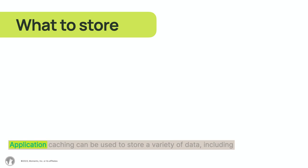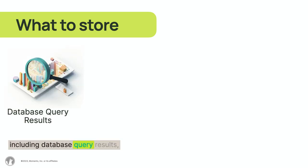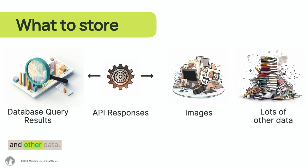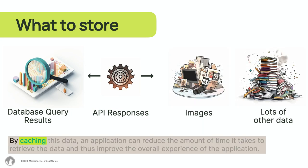Application caching can be used to store a variety of data, including database query results, API responses, images, and other data. By caching this data, an application can reduce the amount of time it takes to retrieve the data and thus improve the overall experience of the application.